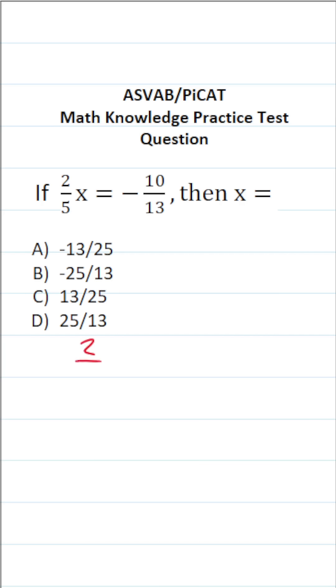So in other words, we want to solve the equation two-fifths x equals negative 10 over 13 for x.